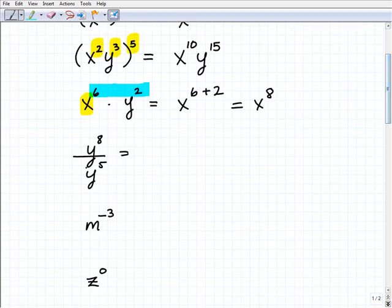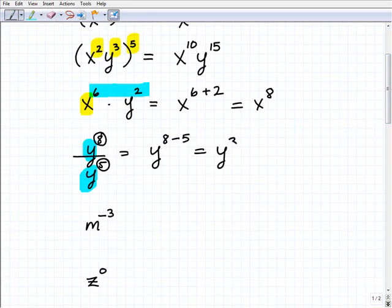All right. Moving on, division. Once again, if we have the same base and we're dividing powers, the way the rule goes is all we have to do is subtract the numerator's exponent from the denominator's exponent. So this would be y to the 8 minus 5 or of course y to the third power.